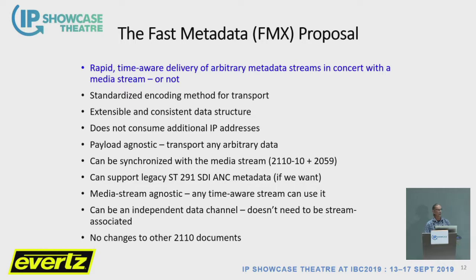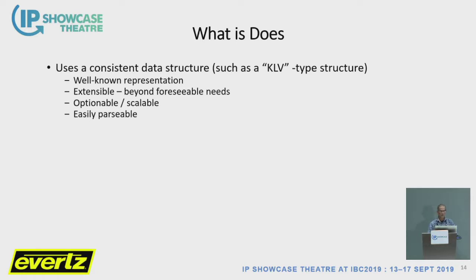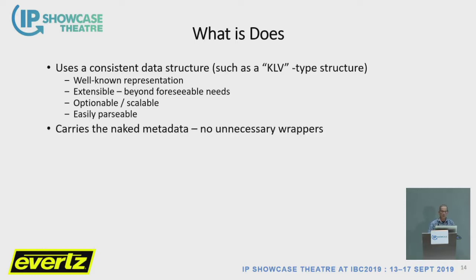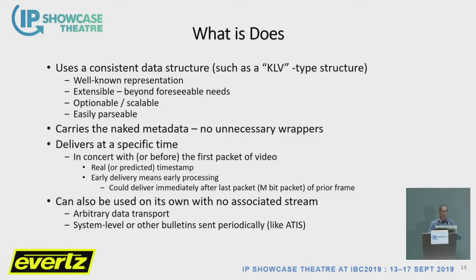And no changes to any other 2110 documents in the course of defining this new standard. So what 2110-41 is going to do is use a consistent data structure such as a KLV-type structure — Key Length Value — a simple way to encode data. It's a very well-known representation; it's extensible, optionable, scalable, and easily parsable. It carries just the naked metadata — no additional wrapping involved. It delivers at a specific time, in concert with a video frame or even before that. We can use a real or predicted timestamp to deliver it when we want. Early delivery means early processing — if something has to affect the next frame of video, we can deliver it in advance so processing can occur in time to deliver that processed frame. And you can use it on its own with no associated stream — arbitrary data transport, system-level bulletins, just sent periodically.